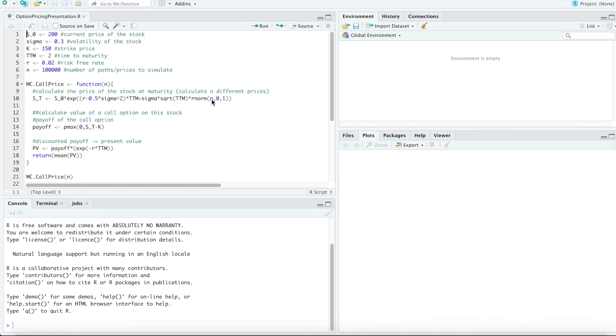So let's look at our example. Here we will look at a European call on a stock with current price 200, volatility 0.3, the strike price of the option is 150, the time to maturity is 2 years, the risk-free rate on the market is 0.02 and we want to run our simulation with 100,000 iterations.